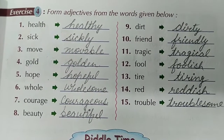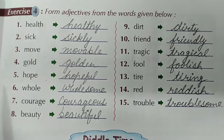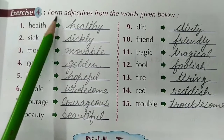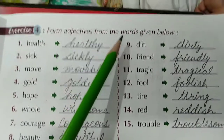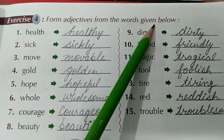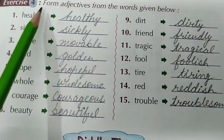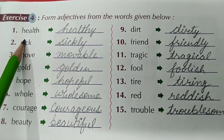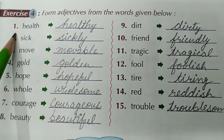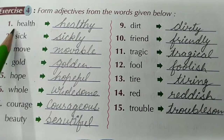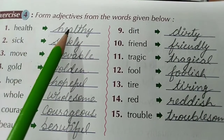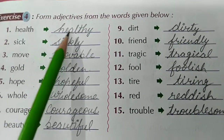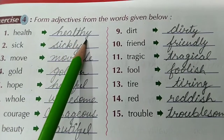Now let's start with page number 41, that is exercise 4. In exercise 4, form adjectives from the words given below. The first word is Health. The adjective form is Healthy — H-E-A-L-T-H-Y. Healthy.